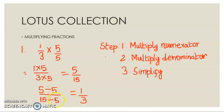5 divided by 5 we get 1, then 15 divided by 5 we get 3. So 1 by 3 is the answer.